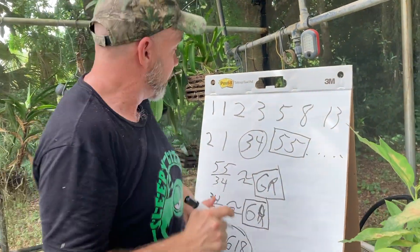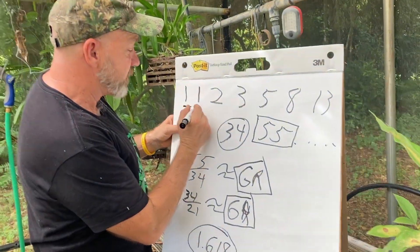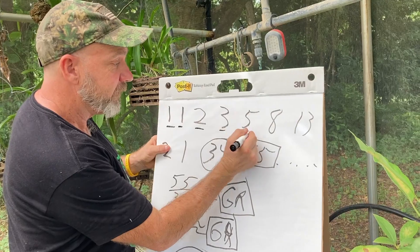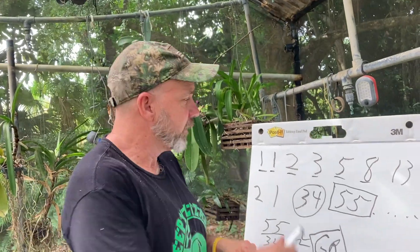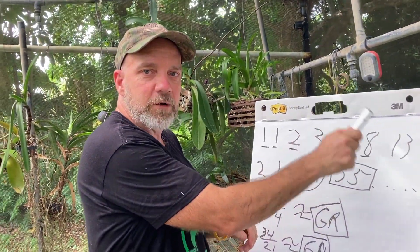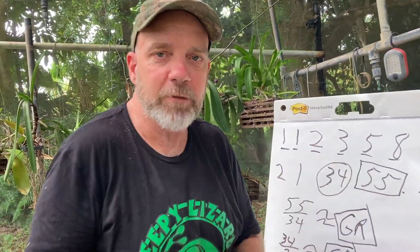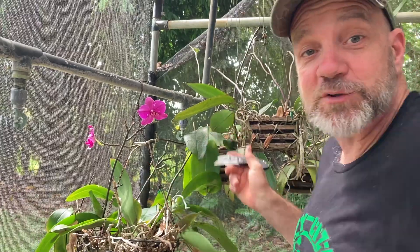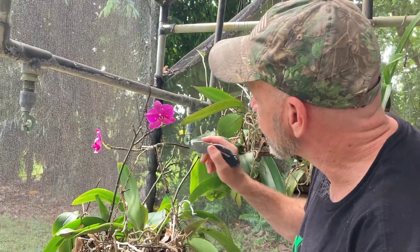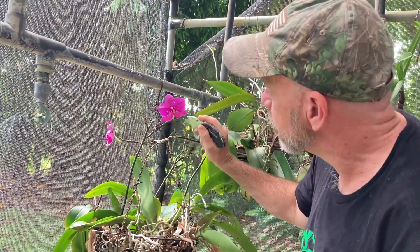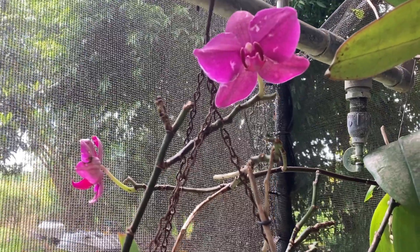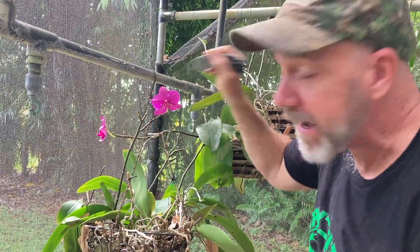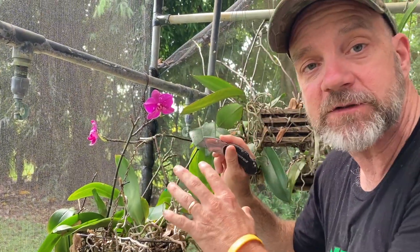Here's the really cool part: the numbers from the Fibonacci sequence surround us in nature. For example, the petals on a flower are always a Fibonacci number. You don't believe me? Let's count the petals on this orchid and see if it holds true. One, two, three, four, five, six, seven, eight. There are eight petals on this orchid.